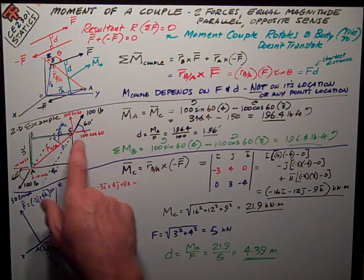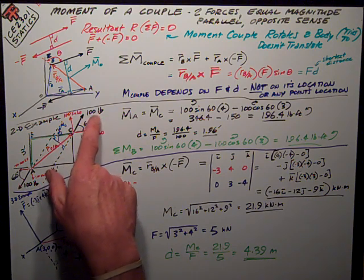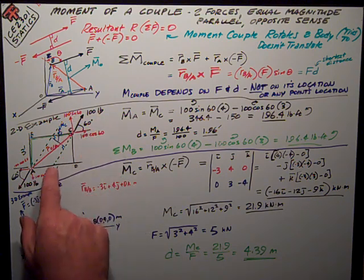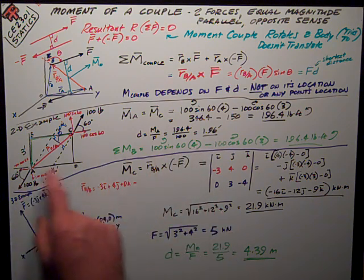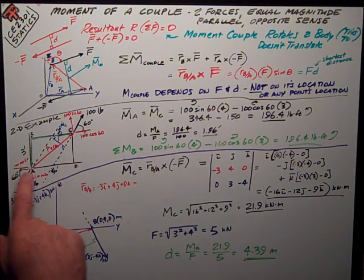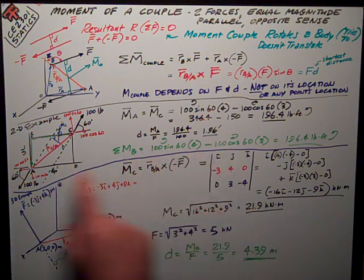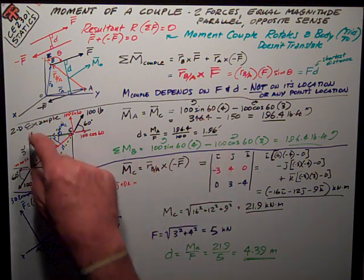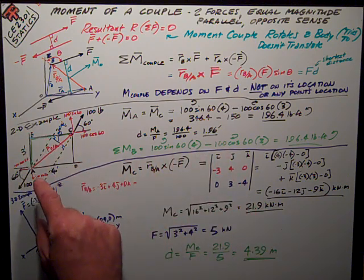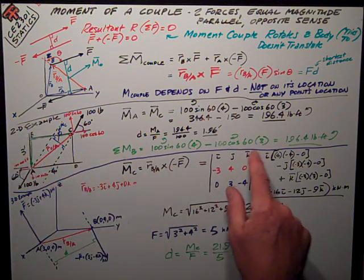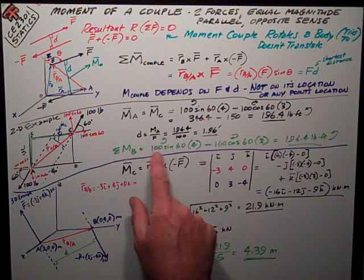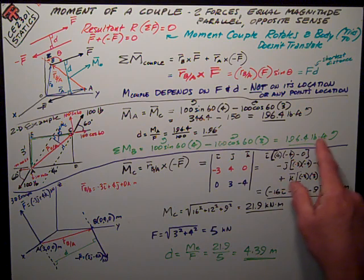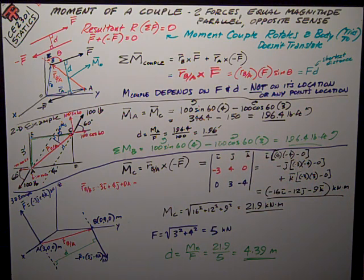So the only thing I'm left with is the Y component of this vector, 100 sine of 60 times 4 feet, and then the X component of this vector, which is 100 cosine of 60 times that Y distance, that shortest distance. So do the math, I get the same exact numbers as I've got up here. Same kind of rotation. This is counterclockwise, this one's clockwise, so I get the same number. Two different ways of skinning the cat.